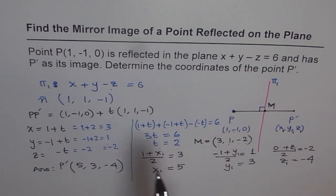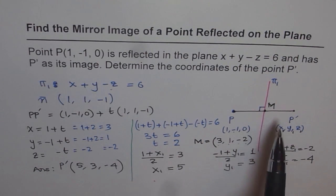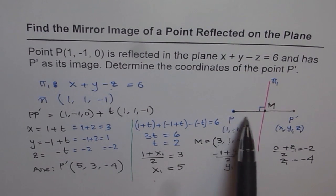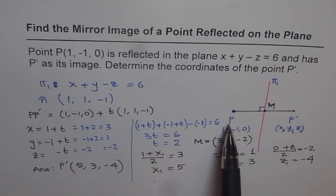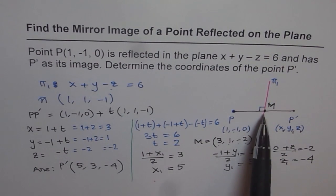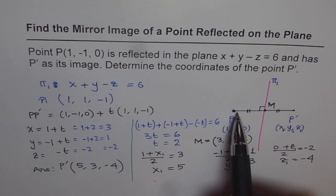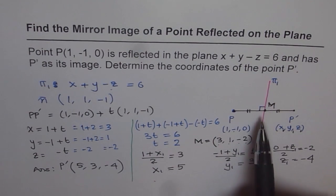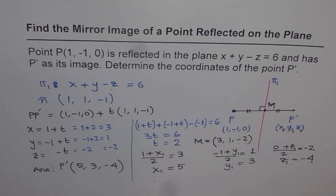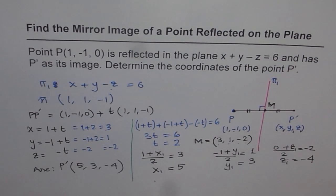When finding a point reflected in a plane, the line joining the point and its reflection must be perpendicular to the plane — that is, along the normal. Since we know point P and the direction of PP dash, we find the equation of the line, then find its intersection M with the plane. That intersection is the midpoint, since the image is as far behind the mirror as the object is in front. We then use M to find P dash. We have similar videos on finding the mirror image of a point in a line. Thank you and all the best.